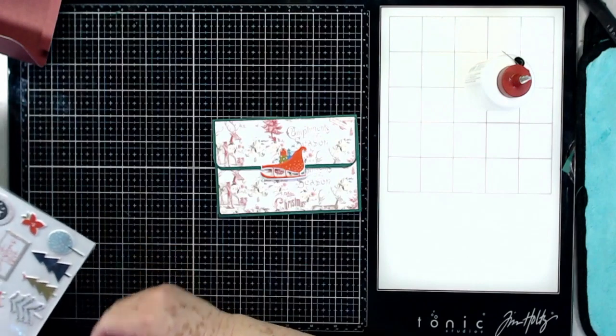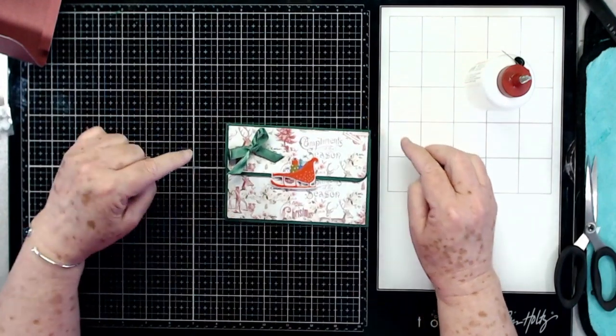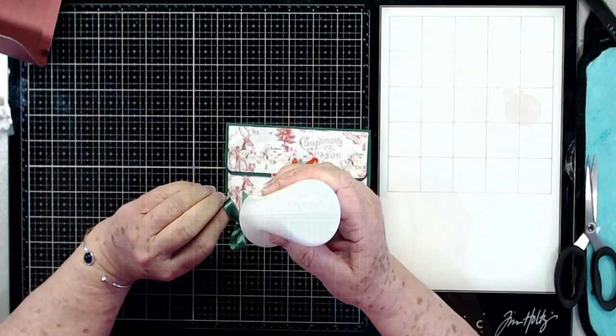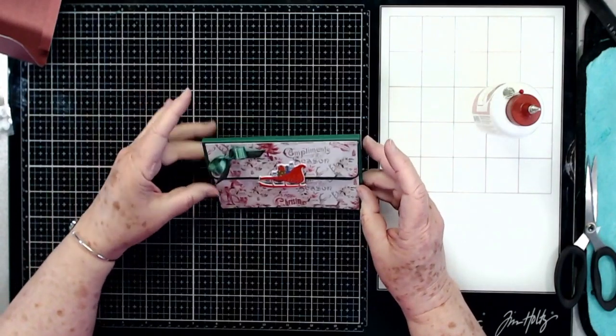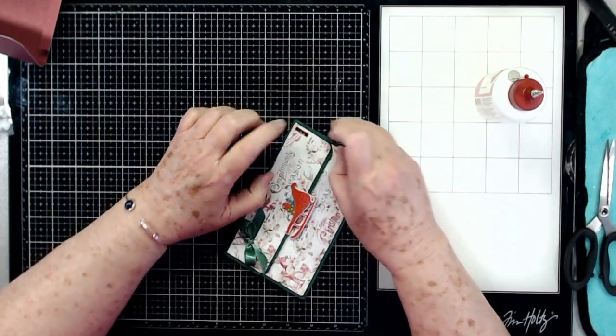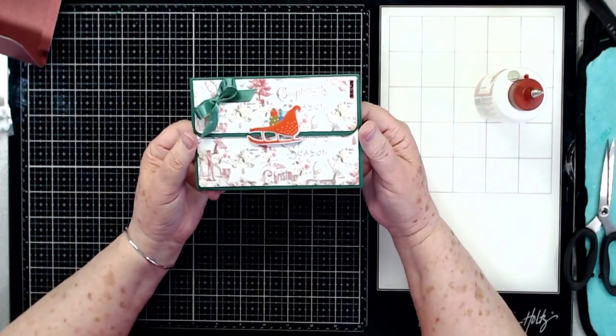That's cute, we're going to leave that like that. Now I'm just going to put this little bow down here. Let's see, what else do we want to put on here? I think I'll use a little bit of that bling and put it right down through there.